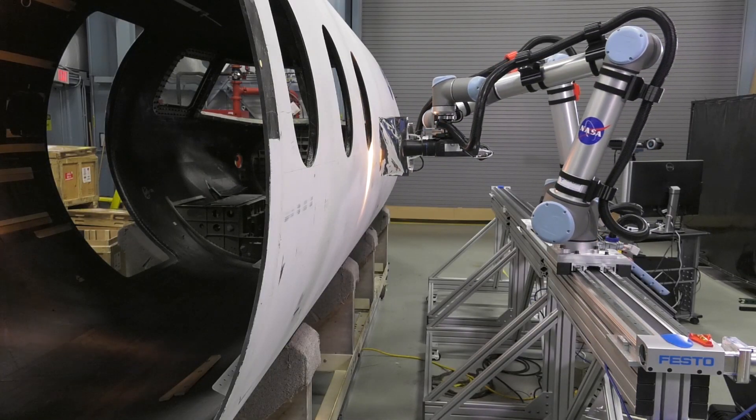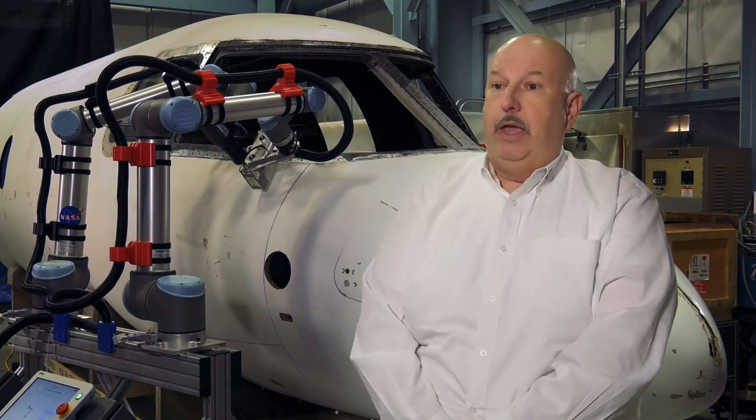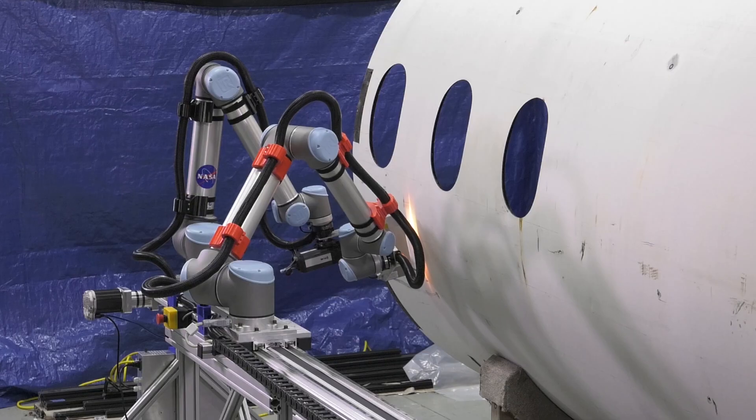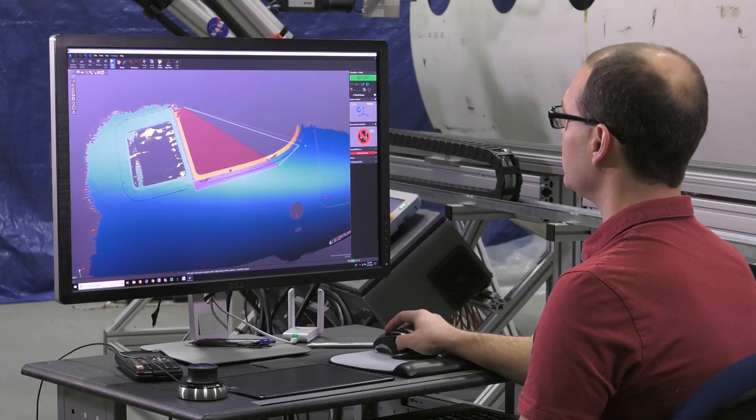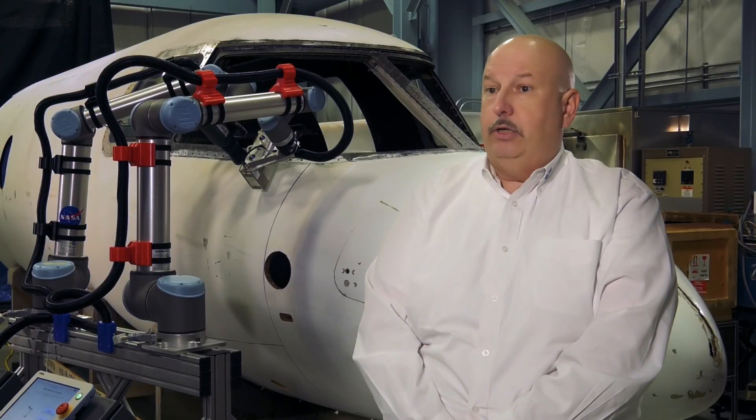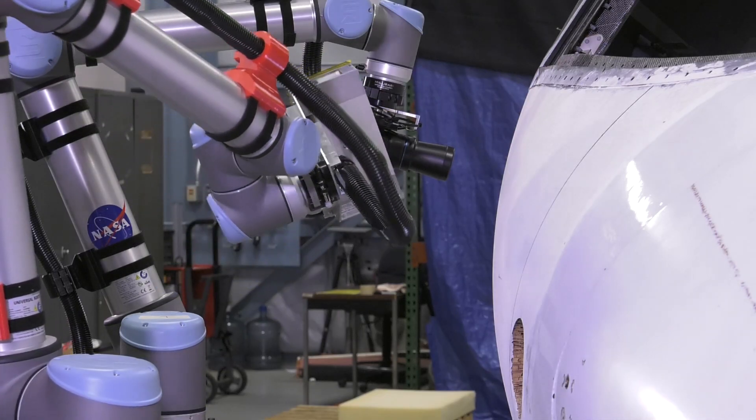Currently, most inspections are done on a point-by-point basis. You inspect a small area, then move that inspection system over the surface of the aircraft either manually or with some kind of scanning system. This is designed to speed that process up but still get the same accuracy.